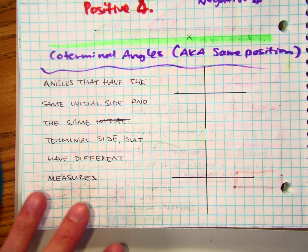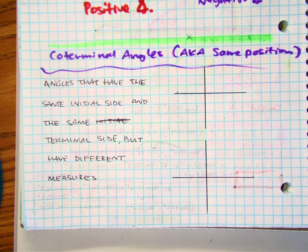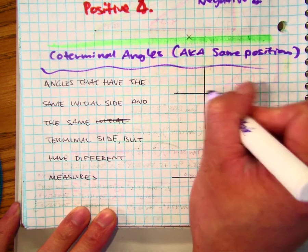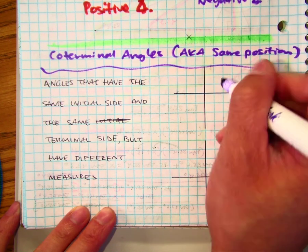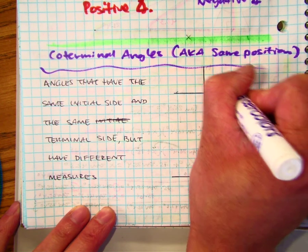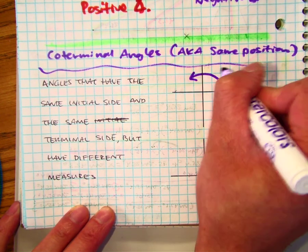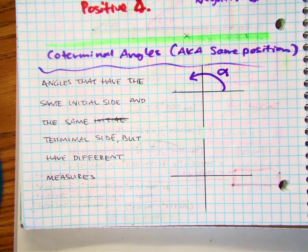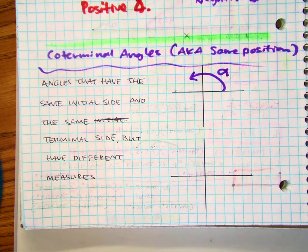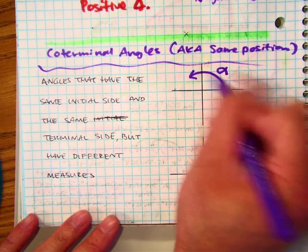So let me talk about this conceptually. If you start at the initial side in standard position between quadrants one and four, and let's say you move in this direction here and I call that alpha. That's a positive angle.